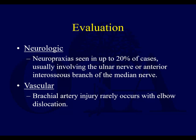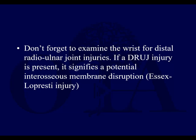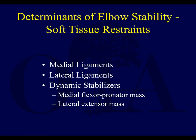You should be aware of nerve injuries especially if the patient is not going to be fully awake or is a trauma patient getting intubated. Don't forget to examine the wrist for distal radial ulnar joint injuries, because if a DRUJ injury is present, you could possibly also have a longitudinal forearm injury — an interosseous membrane injury, the so-called Essex-Lopresti injury.